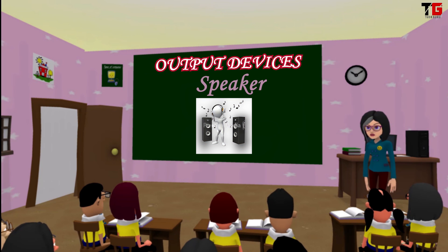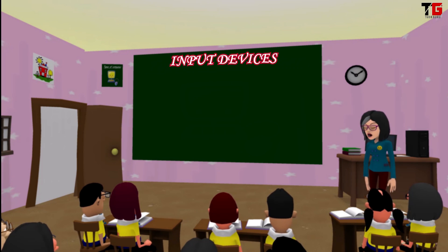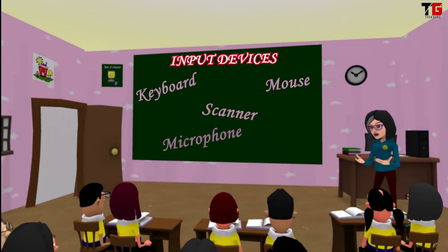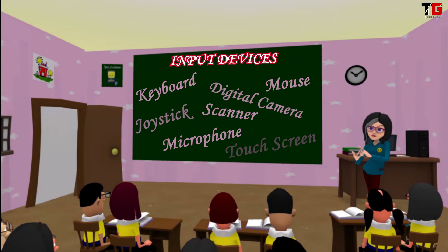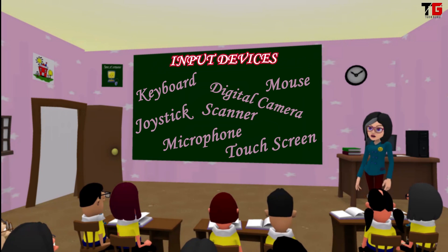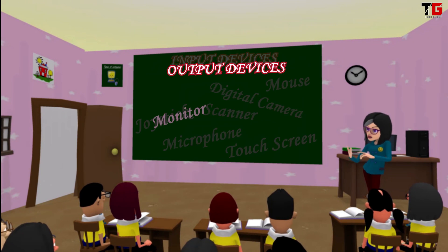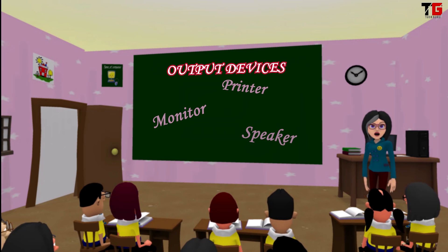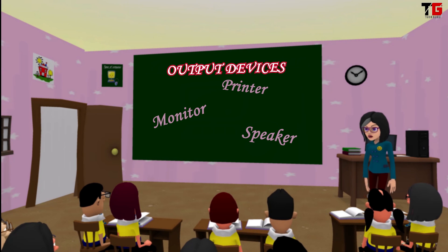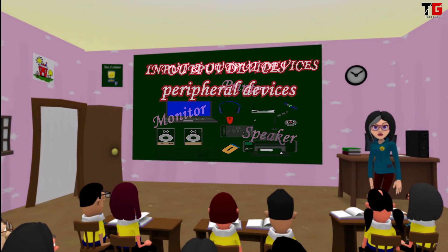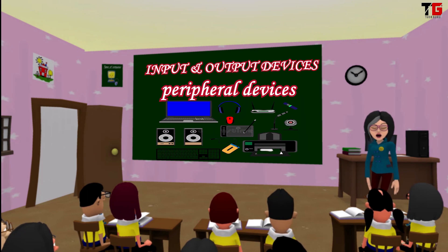So, students, today we studied about input and output devices. Keyboard, mouse, scanner, microphone, digital camera, joystick and touchscreen are the input devices. Monitor, printer and speaker are the output devices. Students, these input and output devices are also called peripheral devices. So, that's it for today's session. Thank you.